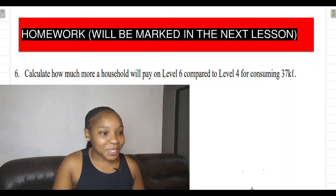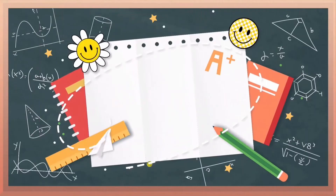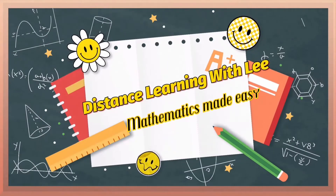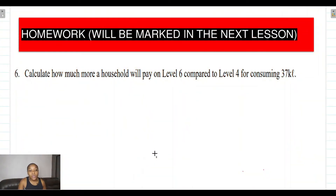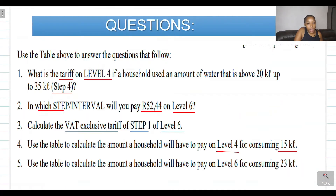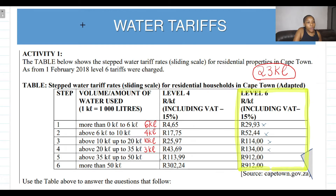Let's get into it. So, calculate how much more a household will pay on Level 6 compared to Level 4 for consuming 37 kiloliters of water. We're going to be calculating 37 kiloliters of water, so let's go back to the table that is given to us — we are comparing both Level 6 and Level 4.